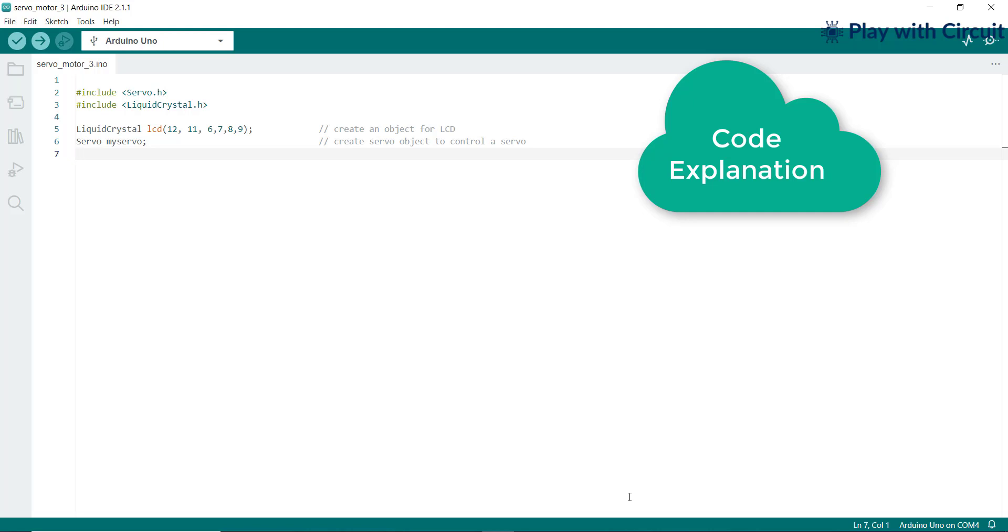After creating objects, macros are defined to specify the pin numbers for the servo motor and potentiometer. Integer variables CurrentAngle and PotReading are declared to store CurrentAngle and Potentiometer Reading, respectively.